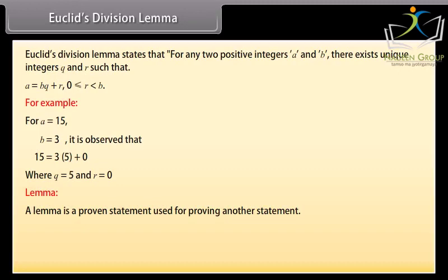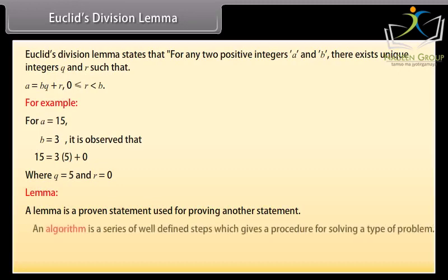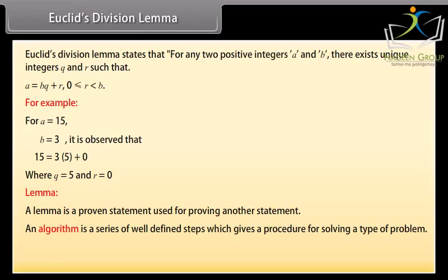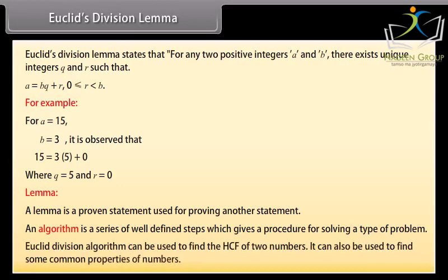Lemma: A lemma is a proven statement used for proving another statement. An algorithm is a series of well-defined steps which gives a procedure for solving a type of problem. Euclid division algorithm can be used to find the HCF of two numbers. It can also be used to find some common properties of numbers.